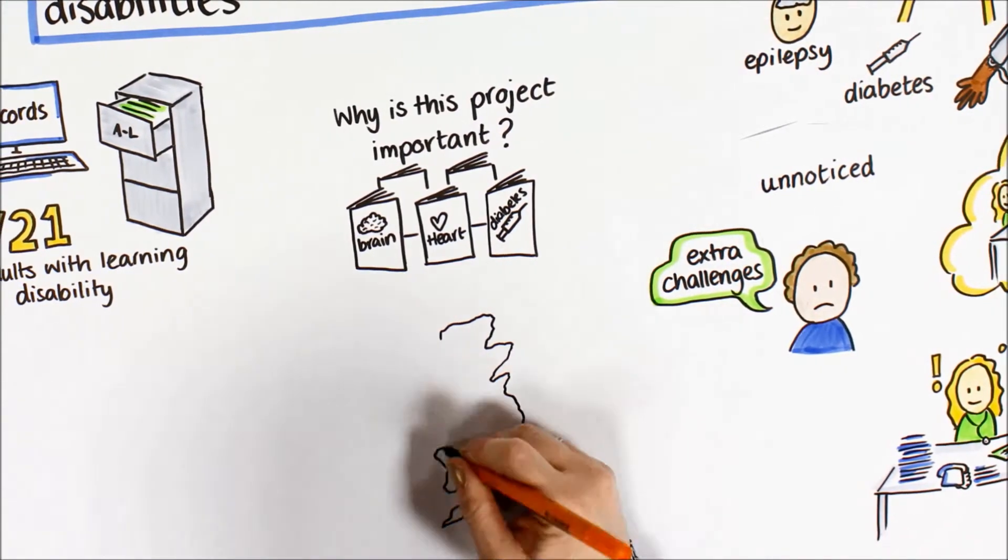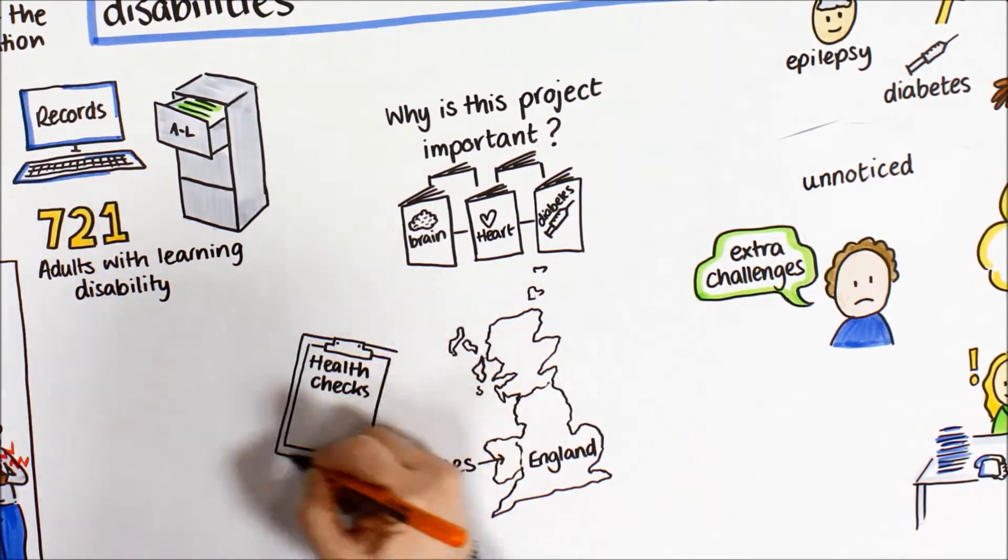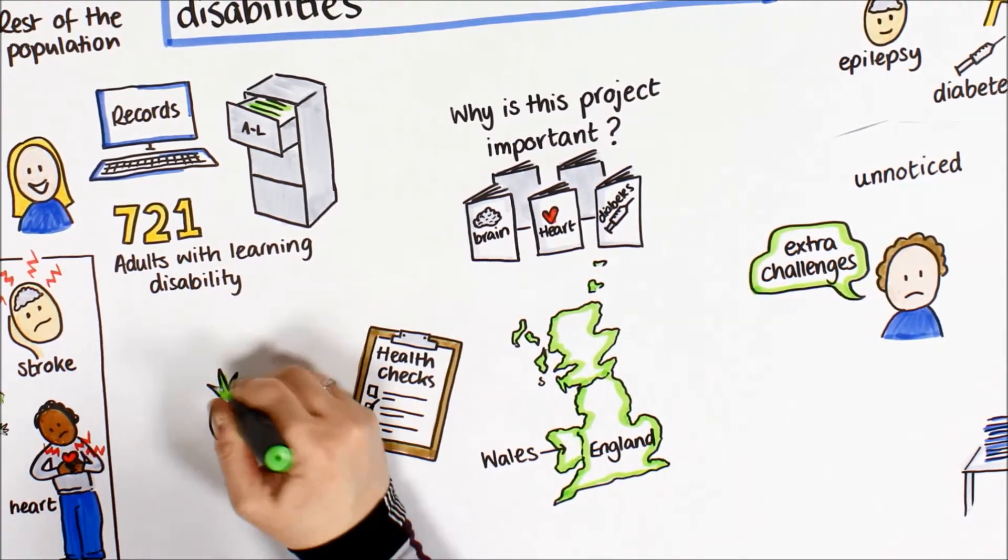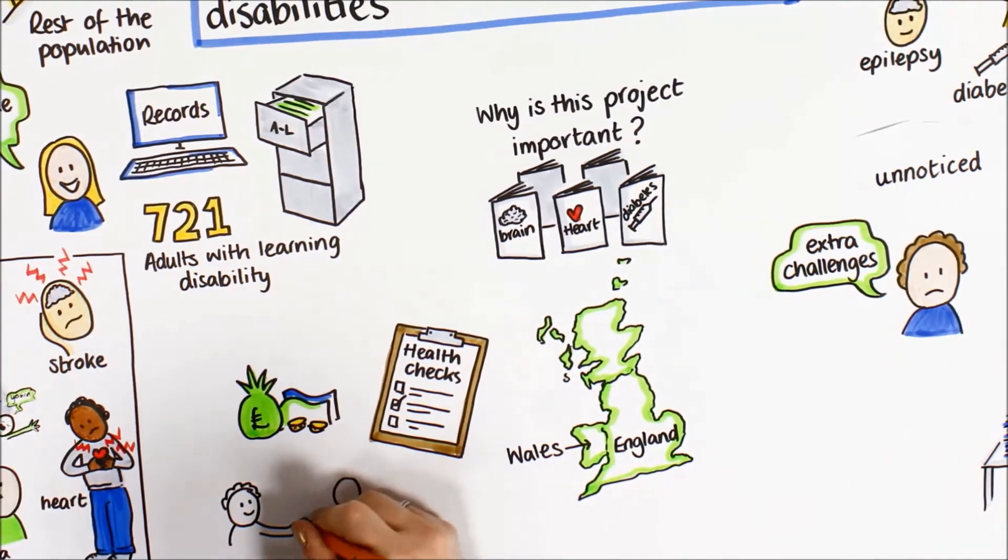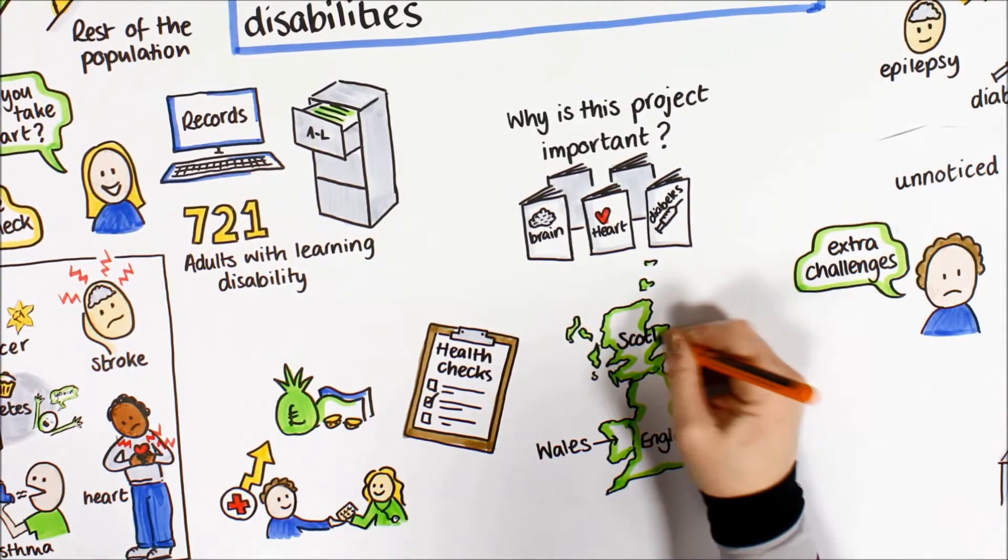In England and Wales people with learning disabilities are offered very detailed health checks every year. Other projects have shown that health checks can save money and improve the health of people with learning disabilities. These types of health checks for people with learning disabilities are not available in Scotland.